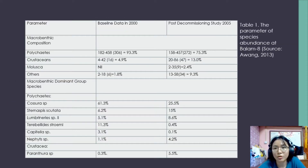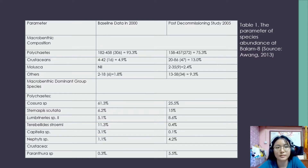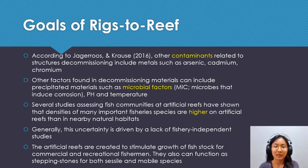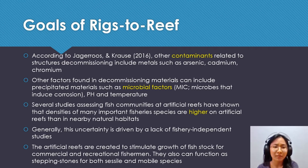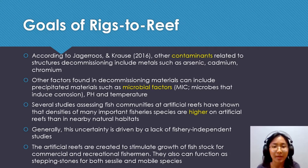This table shows the species abundance at Barang Ed in Sarawak, showing two types: macro-benthic composition and macro-benthic dominant group species. According to Jaegerath and Krauss 2016, contaminants related to decommissioning structures include metals such as arsenic, cadmium, and chromium. Other contaminants found in decommissioning material can also include precipitated material such as microbial factors.